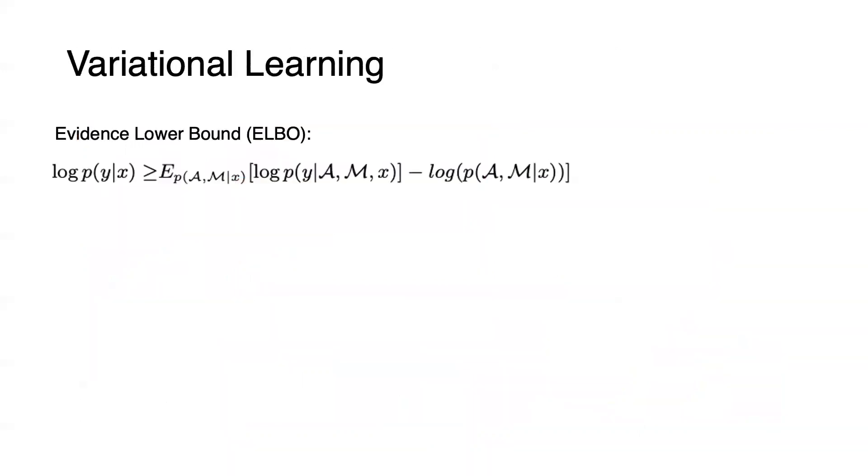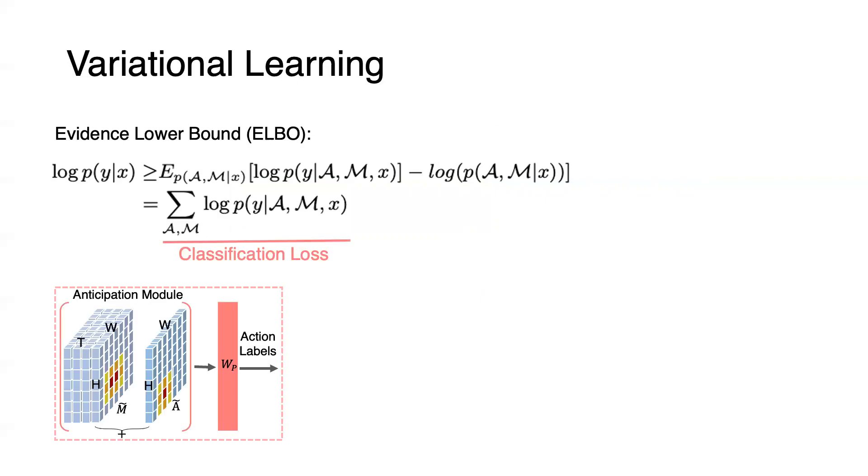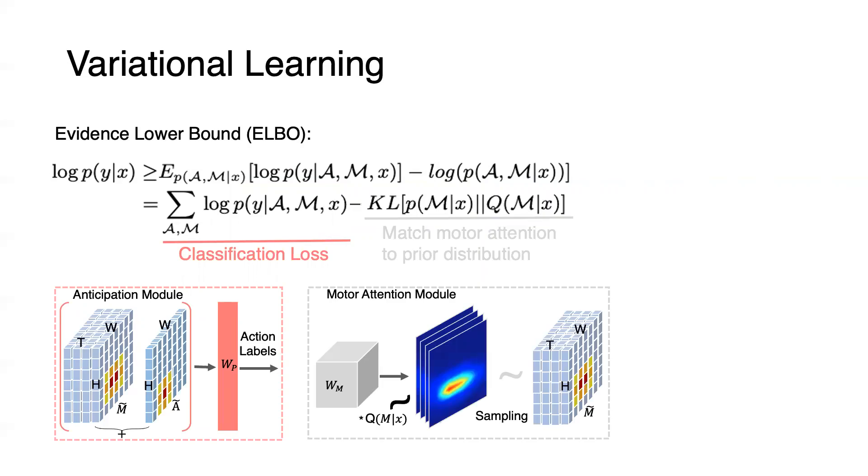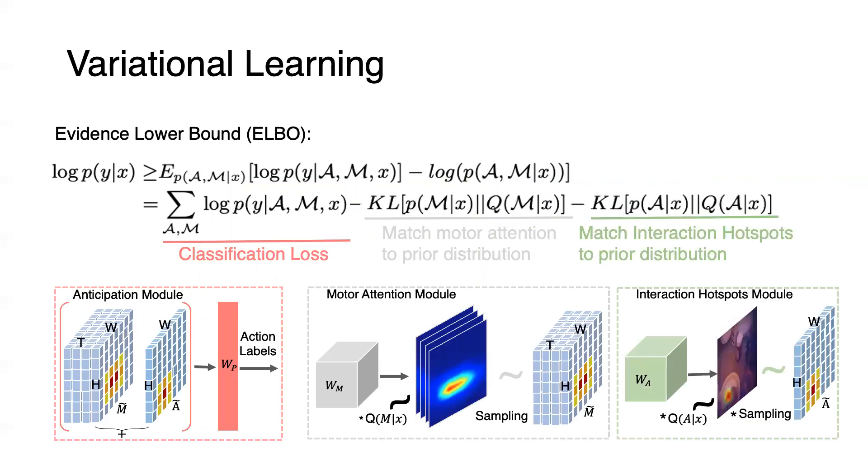We assume the prior distribution of motor attention and interaction hotspots are given as training signals. Our proposed model thereby optimizes the deep latent variable model by maximizing the following evidence lower bound. Therefore, the equivalent training loss has three terms. The first term is the standard cross-entropy loss for action classification. The two KL divergence terms match the motor attention and interaction hotspots to the corresponding prior distribution.